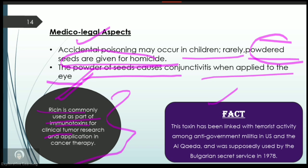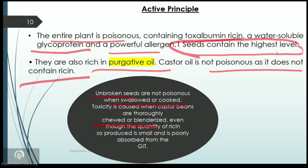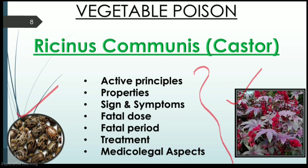As a matter of fact, ricin is also linked to terrorist activity by anti-national militant groups in the US and Al-Qaeda. A notable case was encountered in Bulgaria in 1978. This concludes today's lecture on Ricinus communis — we will discuss more vegetable poisons in upcoming sessions.